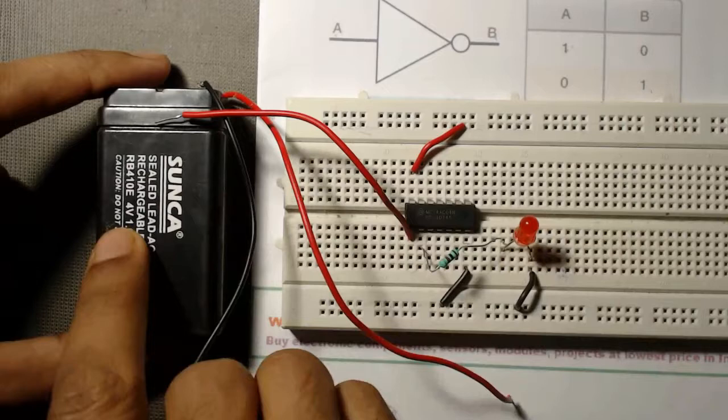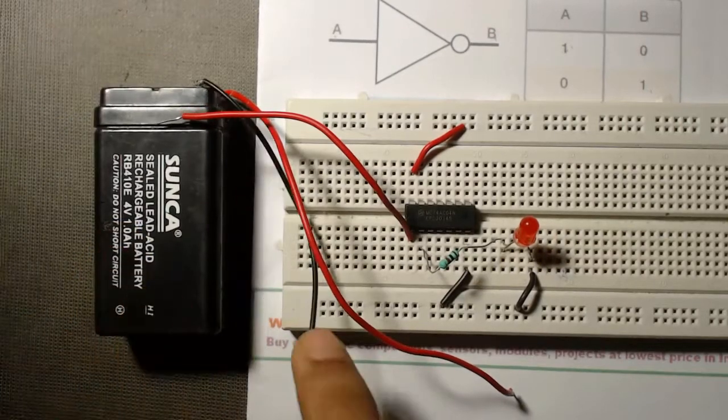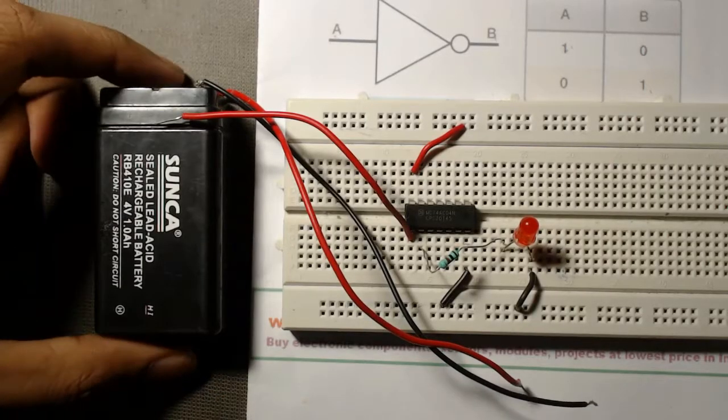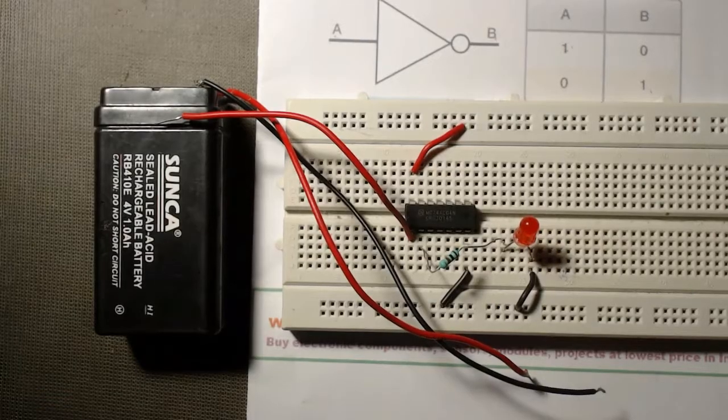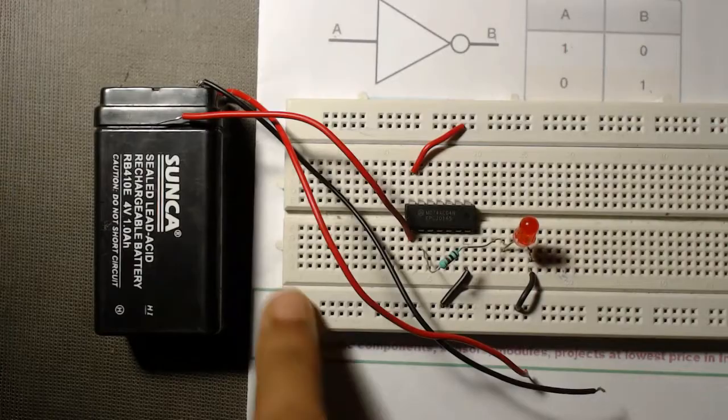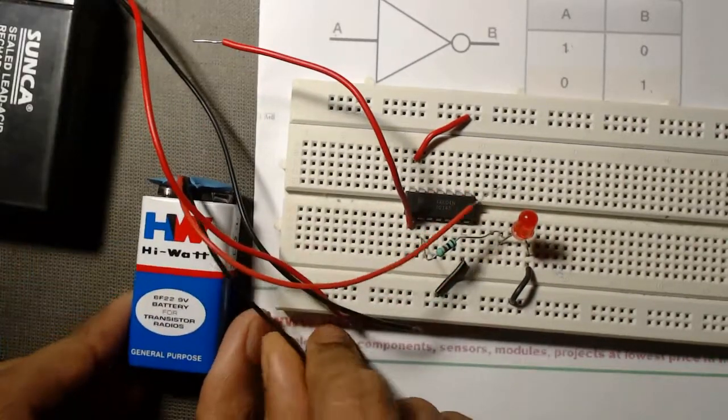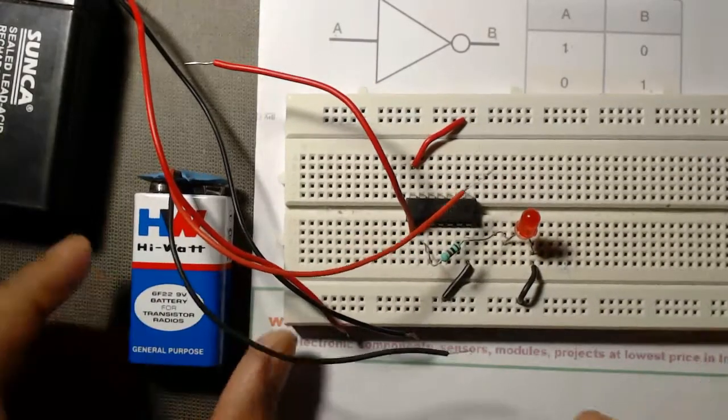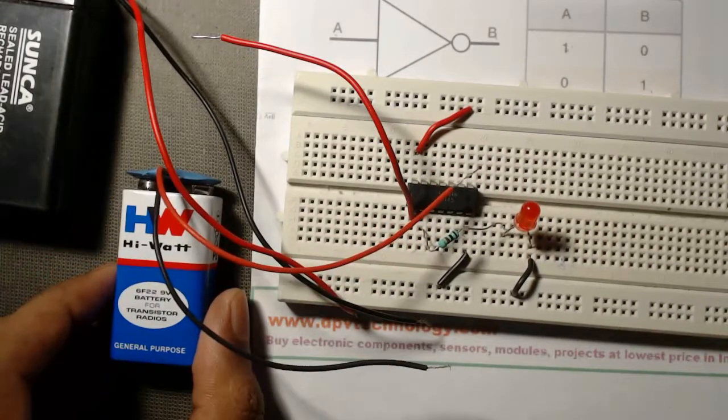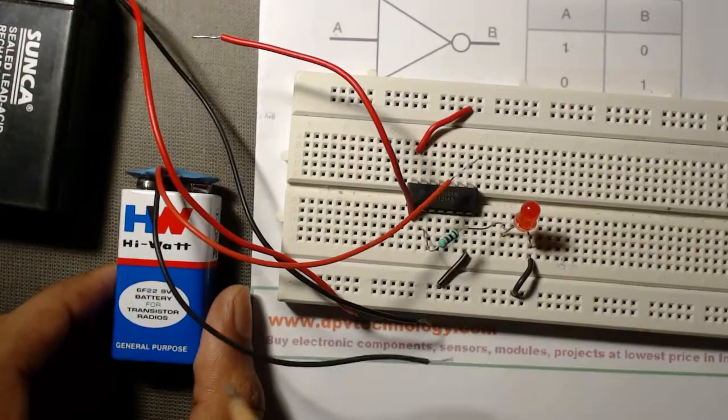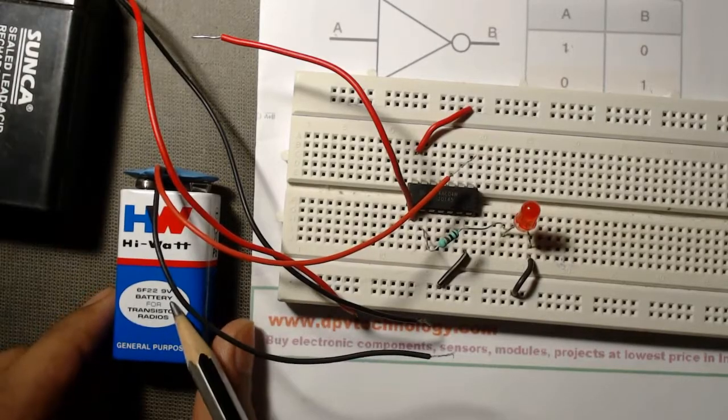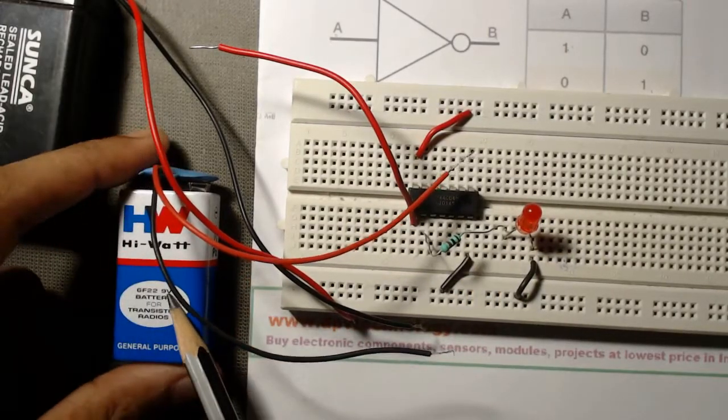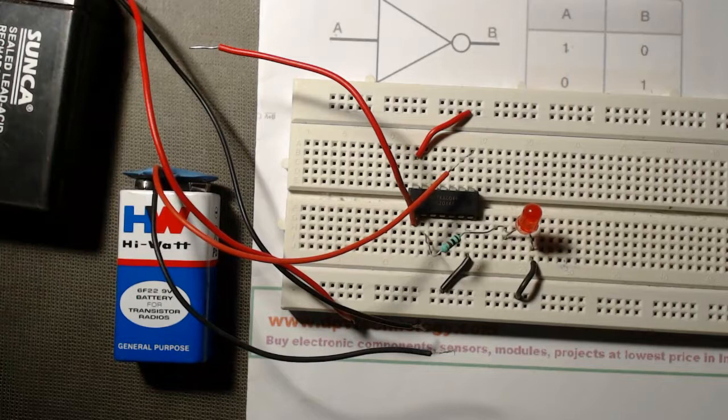We will use this 9 volt battery. You can use a battery of 4 volt or 4.5 volt or 5 volt or 6 volt. That means you can use battery between 4 to 6 volt. But you can also use this type of 9 volt battery because these type of batteries are commonly available at the market. But the recommended voltage for a NOT gate IC is 5 volt. So if we directly use this 9 volt battery, then it may damage the IC.